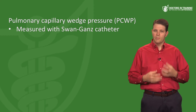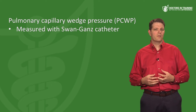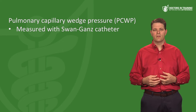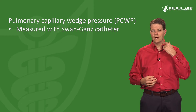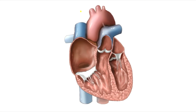We measure the wedge pressure with a Swan-Ganz catheter — a venous catheter placed into either the internal jugular vein or the subclavian vein. The catheter is threaded through the superior vena cava, into the right atrium, and then into the right ventricle. There's a little balloon on the end of the catheter, and when you inflate it, it drifts along with blood flow.